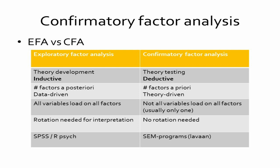Confirmatory factor analysis, on the other hand, is a more deductive technique. We use it when we have an a priori theoretical model. In CFA the number of factors is always specified a priori, and we decide which items belong with which factors — making it a very theory-driven approach. In EFA all items load on all factors, whereas in CFA we decide which items load on which factors, meaning some loadings have been fixed to zero.